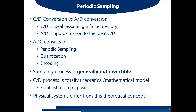An ADC consists of three components. The first stage is periodic sampling, which is basically C2D conversion. The second stage is quantization, which results in a finite memory signal. The third stage is encoding, which converts the quantized signal into ones and zeros. These are the three stages of ADC, but in today's lecture we focus only on periodic sampling.